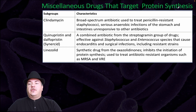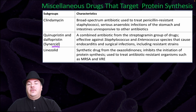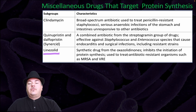Miscellaneous drugs targeting protein synthesis include clindamycin, a broad spectrum antibiotic used to treat penicillin-resistant staphylococci, serious anaerobic infections of the stomach and intestines unresponsive to other antibiotics. Synercid is a combined antibiotic from the streptogramin group, effective against Staphylococcus and Enterococcus species causing enterococcitis and surgical infections including resistant strains. Linezolid is a synthetic drug that inhibits initiation of protein synthesis, used to treat antibiotic-resistant organisms such as MRSA and VRE.